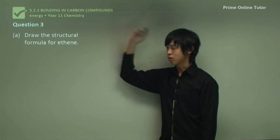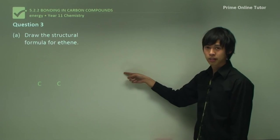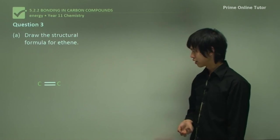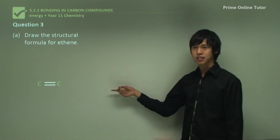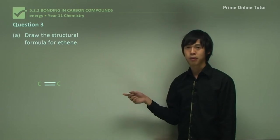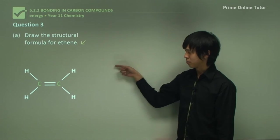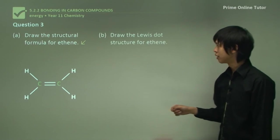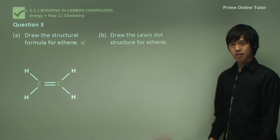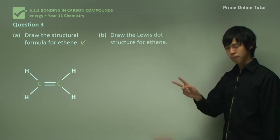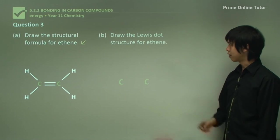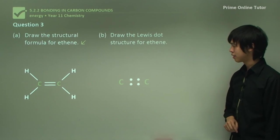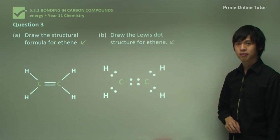Question: draw the structural formula for ethene. The 'eth-' prefix means two carbons, and '-ene' represents a double bond between them. The remaining bonds are filled with hydrogens so that each carbon has four bonds in total. For the Lewis dot structure of ethene, two carbons are connected by a double bond representing four electrons, with hydrogens filling the remaining positions on each carbon.